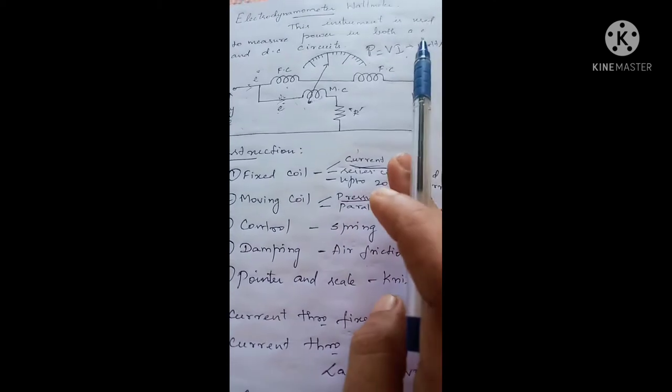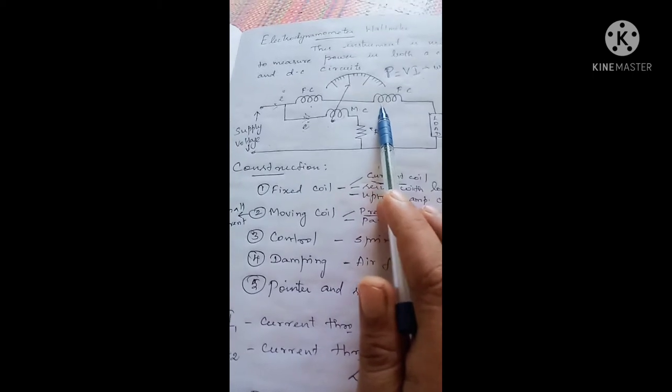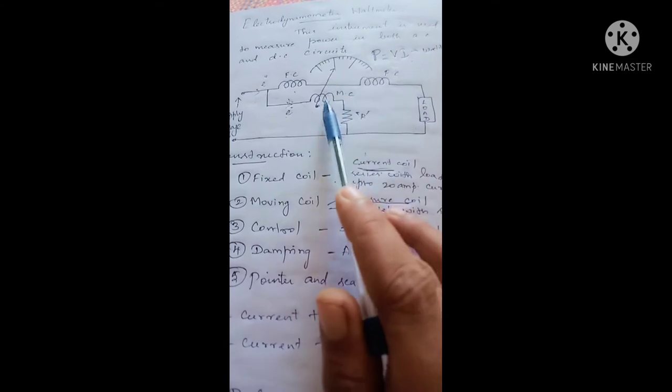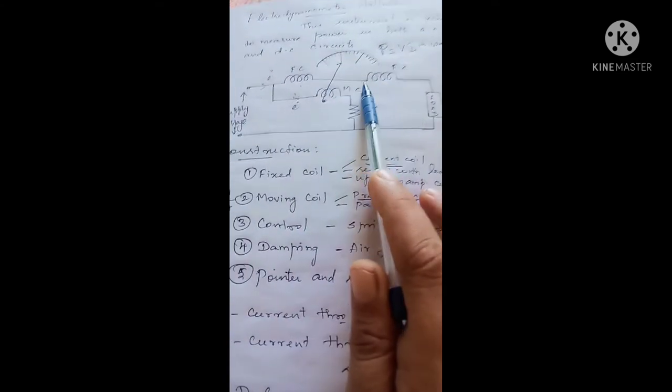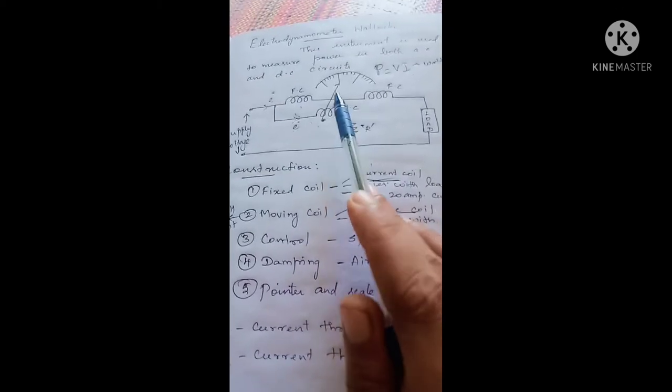For any instrument to operate, it needs three different torques: deflecting torque, control torque, and damping torque. The deflecting torque is developed by means of the current through the fixed coil — that is, the electromagnet — due to the interaction of the moving coil in the electromagnetic field.